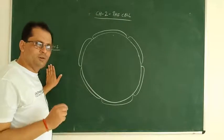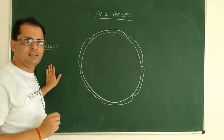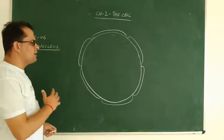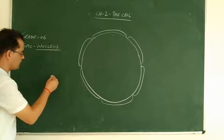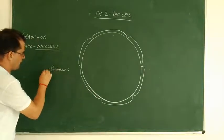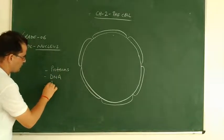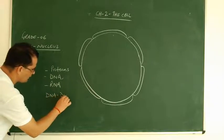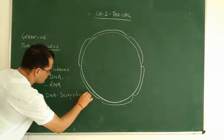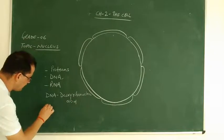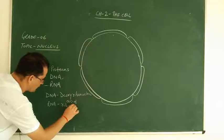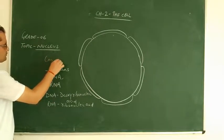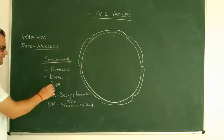That's why the nucleus lies at the periphery in the plant cell. So basically, the nucleus is composed of proteins, DNA, and RNA. DNA is deoxyribonucleic acid and RNA is ribonucleic acid. So proteins, DNA, and RNA are the important materials of which the nucleus is made.